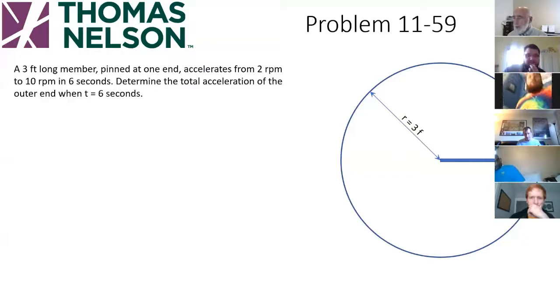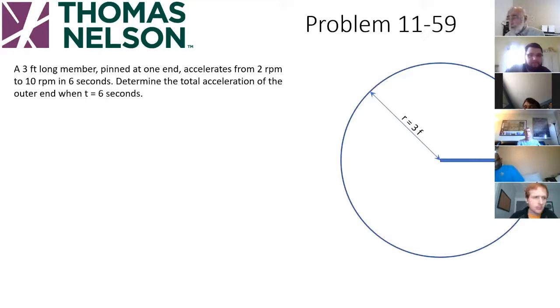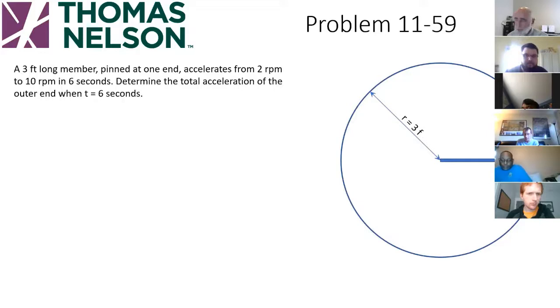This is simply a rod. It does not start off stationary — it starts off at 2 RPM, and it accelerates to 10 RPM in six seconds. Determine the total acceleration at the outer end when t equals six seconds.